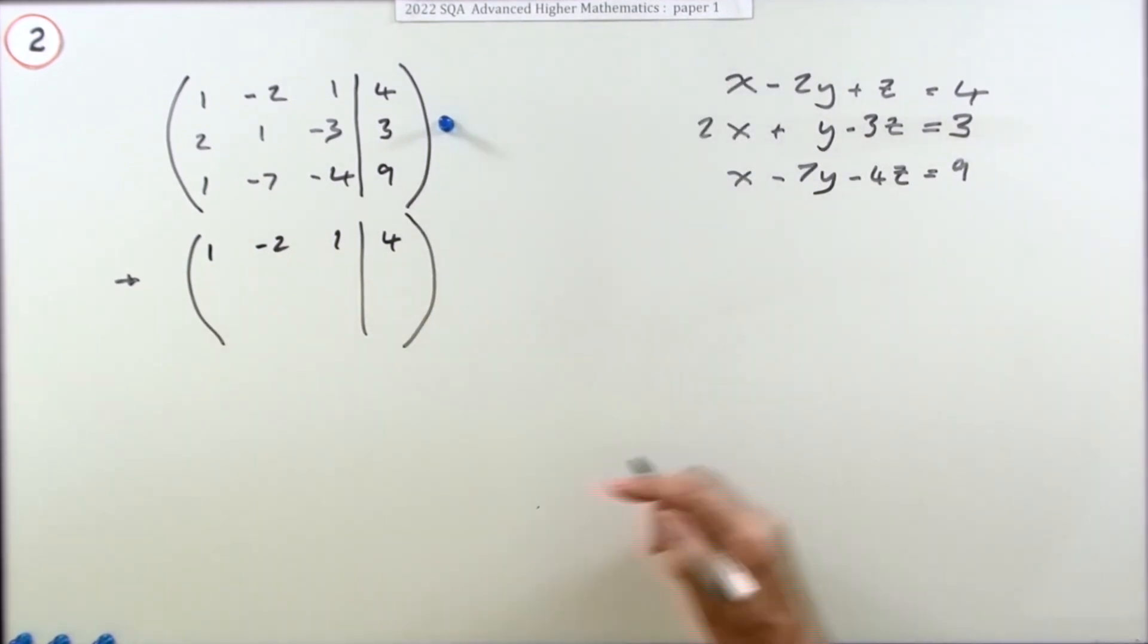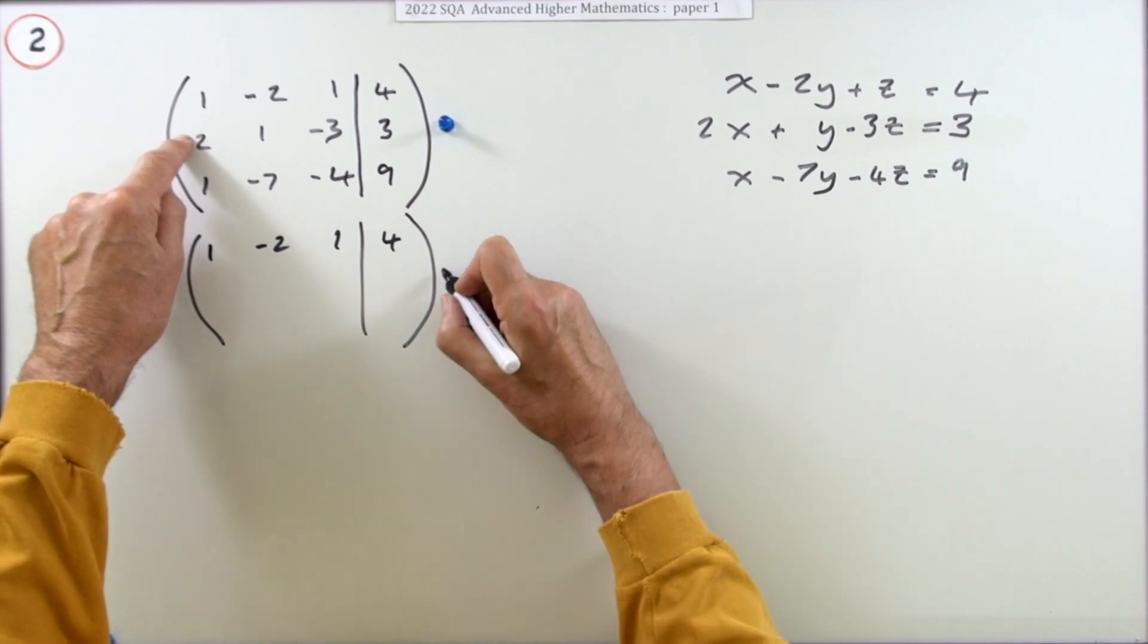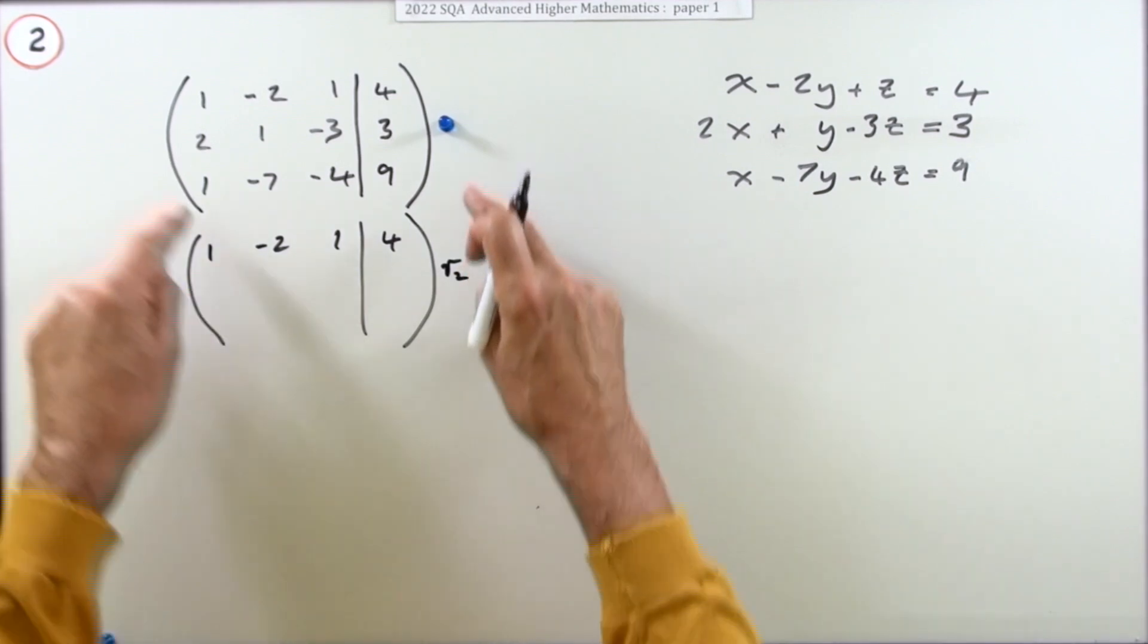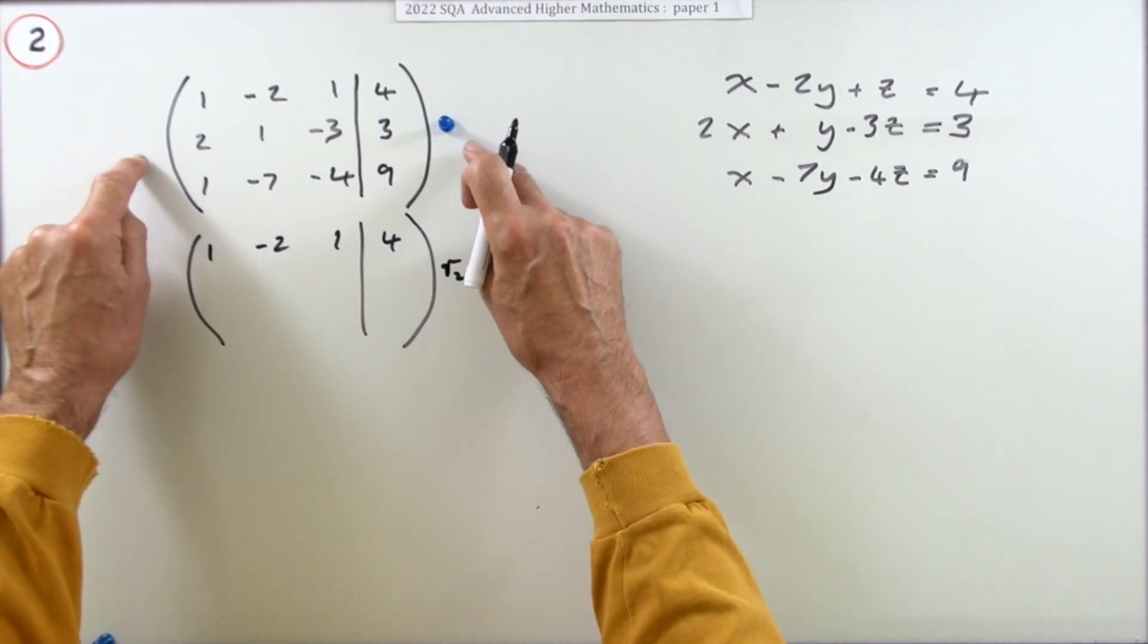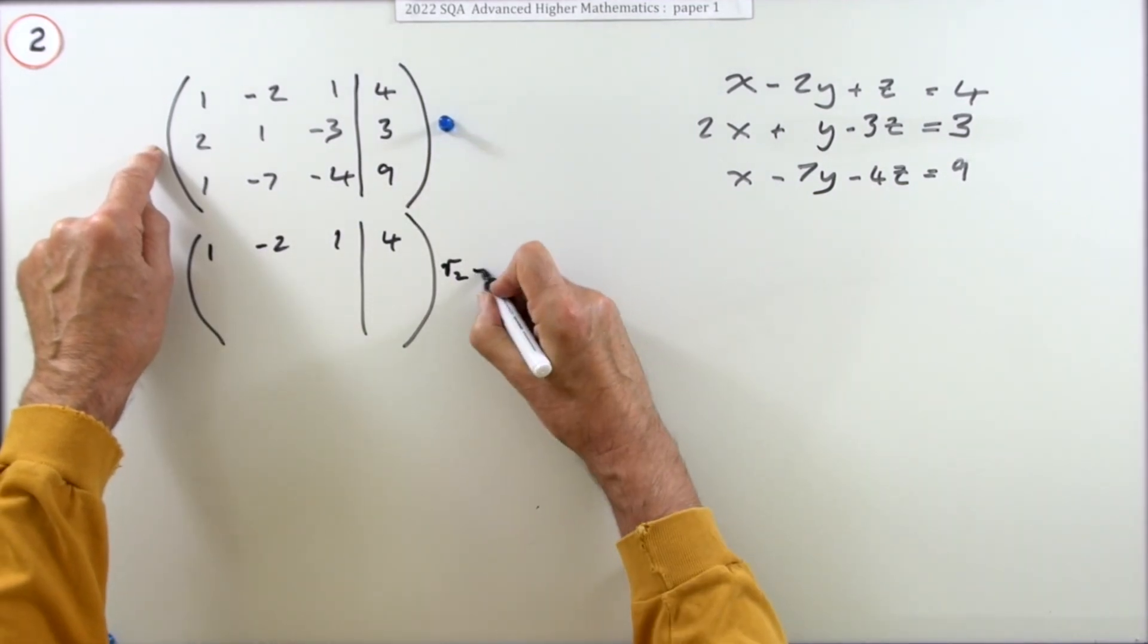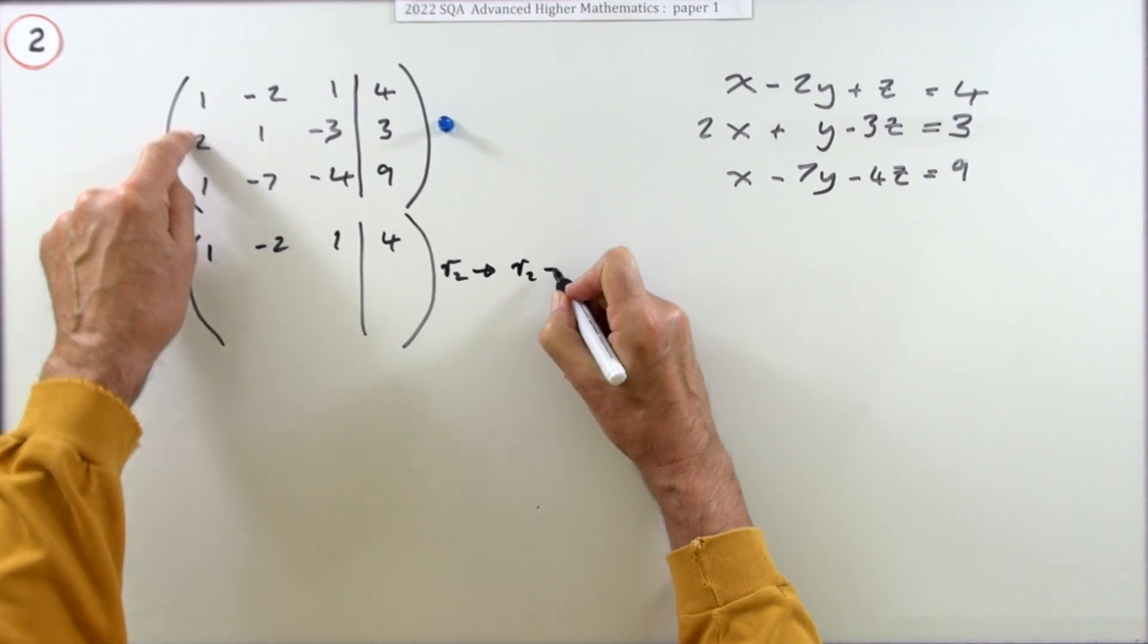Well, if I took this and doubled that one and subtracted them, the x's would disappear. It's the same here. What I'm going to do is I'm going to take row two - when I say row two here, I don't mean this row two; this refers to the matrix that I've got written here, the original one.